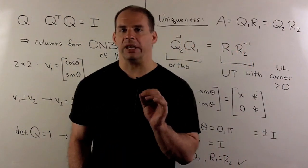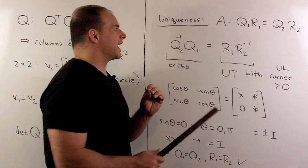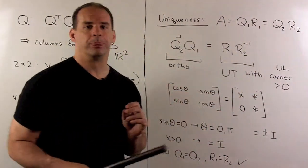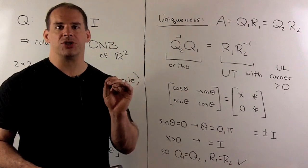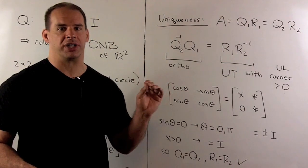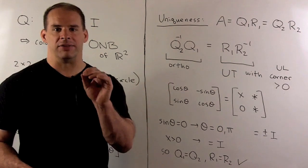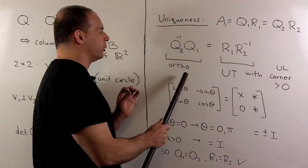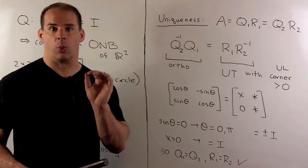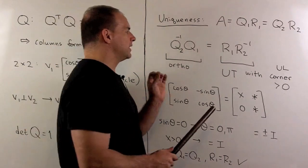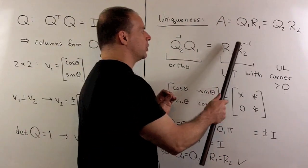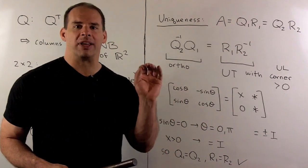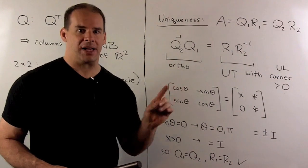Now let's verify uniqueness. Suppose A factors as Q1 R1 and also as Q2 R2. We can multiply by inverses to get the Q's together and the R's together. Q2 inverse times Q1 gives another orthogonal matrix with determinant equal to 1. R1 times R2 inverse gives another upper triangular matrix, with the upper left-hand corner also positive.